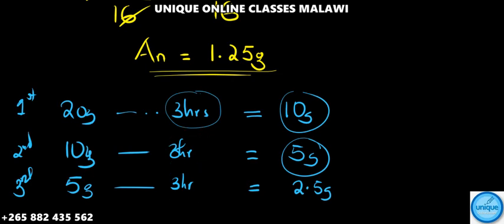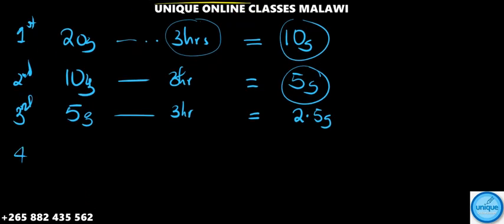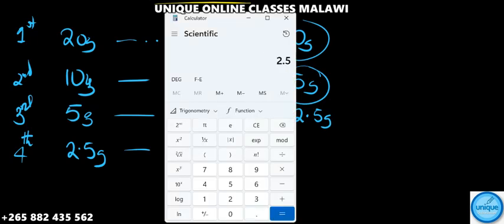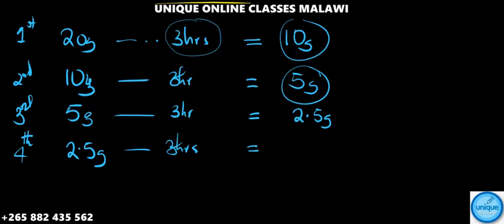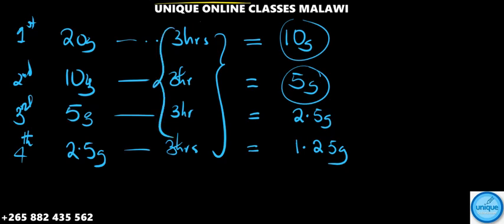After 3 more hours, we find half of 2.5. Let me calculate: 2.5 divided by 2 equals 1.25 grams. This represents 6 hours, then 9 hours, and finally after 12 hours we have 1.25 grams.